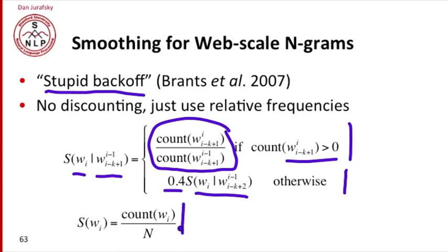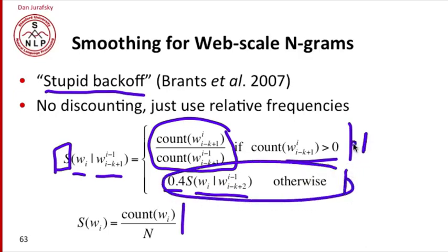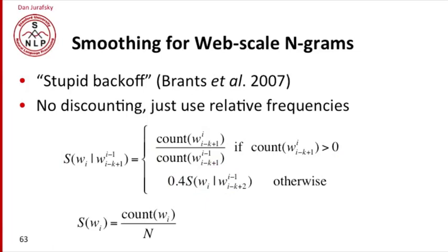We call this S instead of P because stupid backoff doesn't produce probabilities. Because to produce probabilities, we would have to actually use various clever kinds of weighting. A backoff algorithm has to discount this probability to leave some mass left over to use the bigram probabilities. Otherwise, we are going to end up with numbers that are greater than one, and we won't have probabilities. But so stupid backoff produces something like scores rather than probabilities. But it turns out that this works quite well.